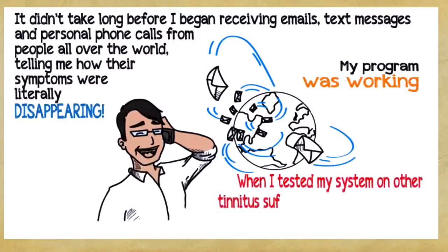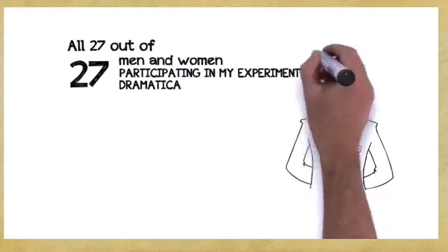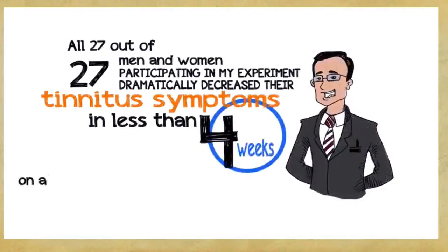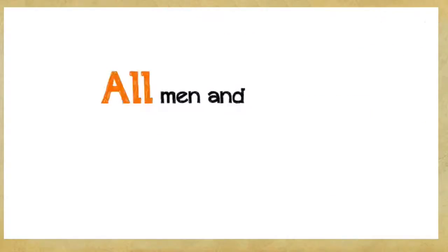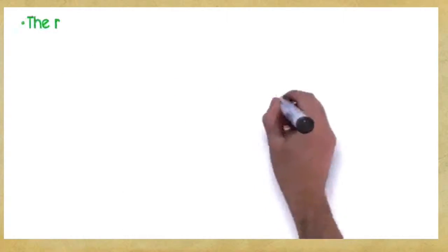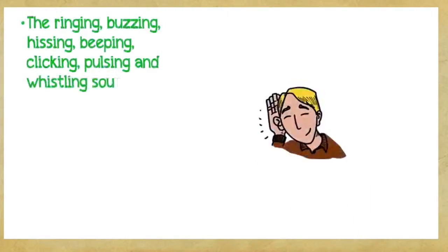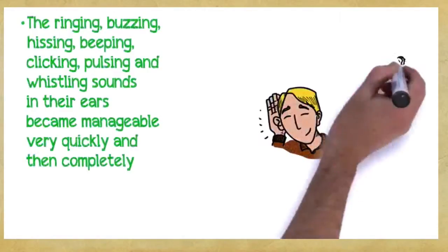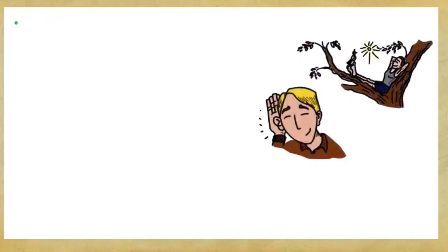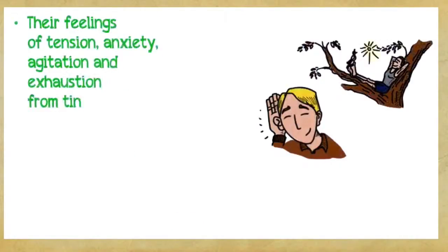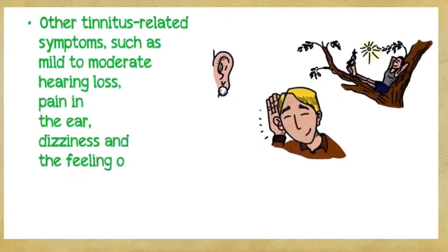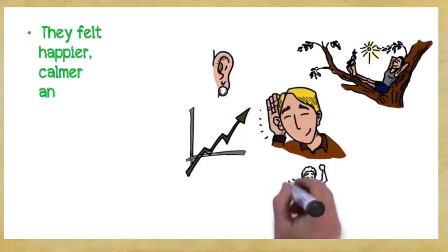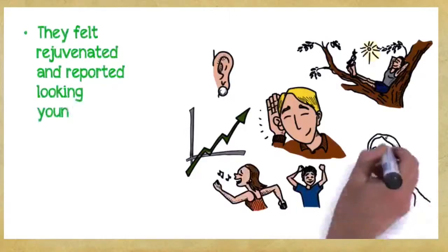It didn't take long before I began receiving emails, text messages, and personal phone calls from people all over the world telling me how their symptoms were literally disappearing. My program was working and more and more people were asking me for help. When I tested my system on other tinnitus sufferers, it yielded the same shocking and groundbreaking results. All 27 out of 27 men and women participating in my experiment dramatically decreased their tinnitus symptoms in less than four weeks on average. What's even more exciting is that it worked for all types of tinnitus and levels of severity and for men and women of any age. All men and women who used this method experienced the following benefits: the ringing, buzzing, hissing, beeping, clicking, pulsing, and whistling sounds in their ears became manageable very quickly and then completely vanished, never to reappear again in less than 30 days. Their feelings of tension, anxiety, agitation, and exhaustion from tinnitus vanished. Other tinnitus-related symptoms such as mild to moderate hearing loss, pain in the ear, dizziness, and the feeling of fullness in the ear were completely eliminated. They felt happier, calmer, and more energetic. They felt rejuvenated and reported looking younger and more vibrant.